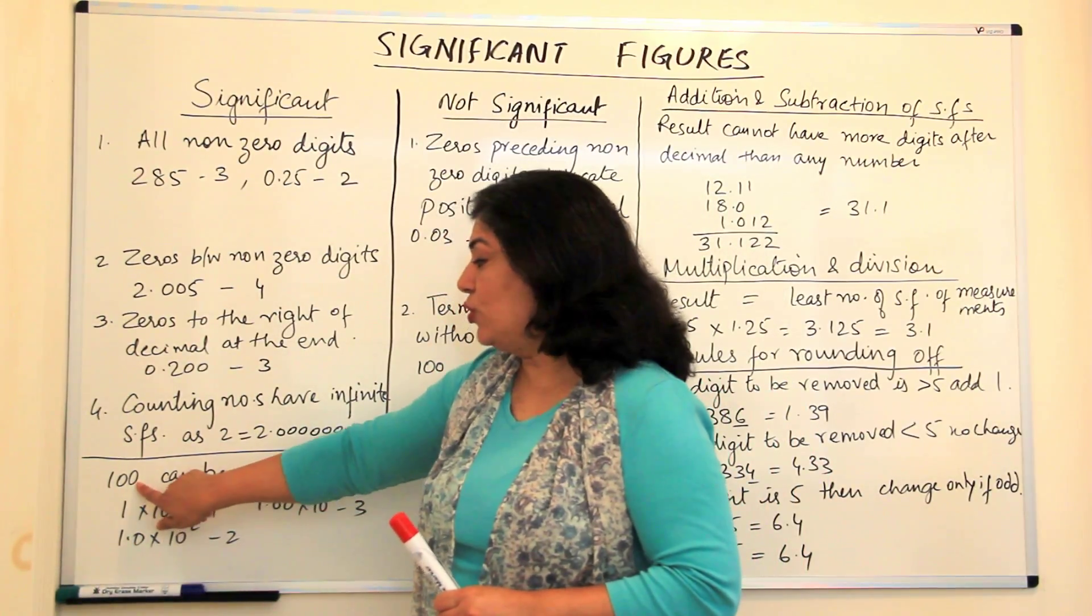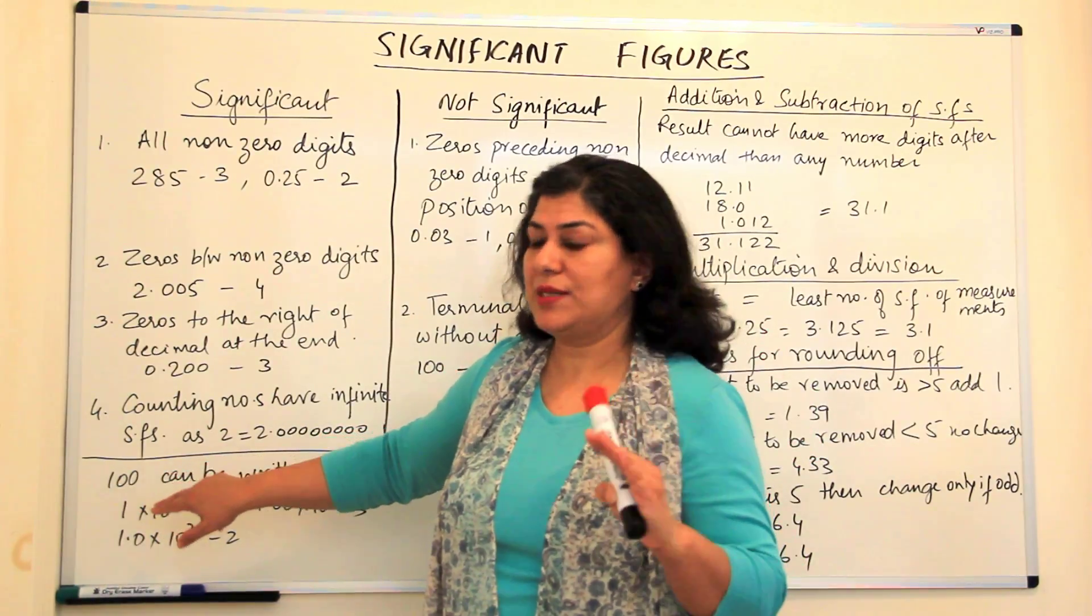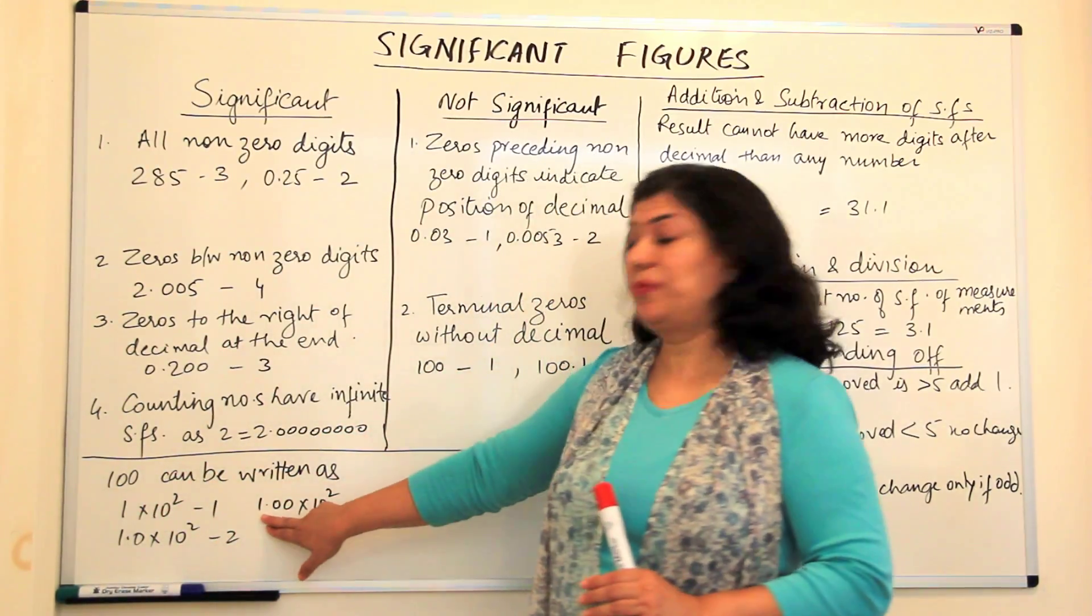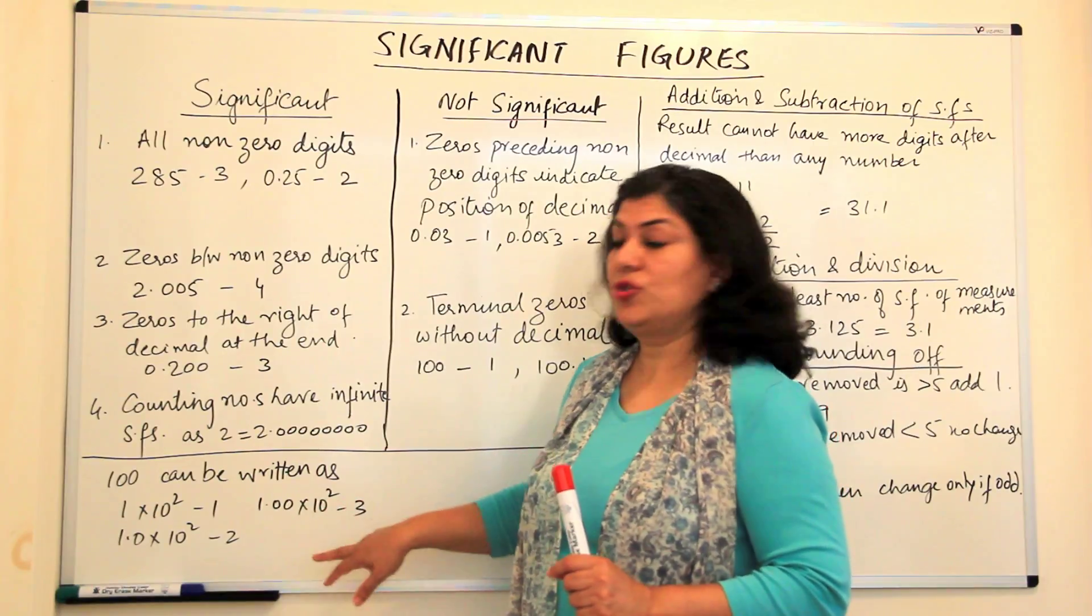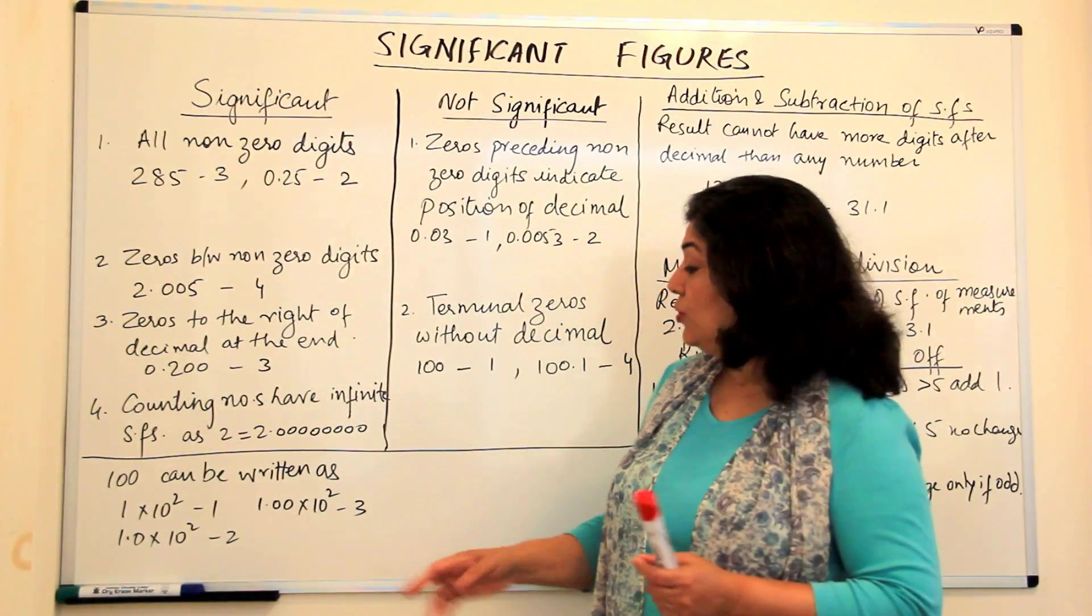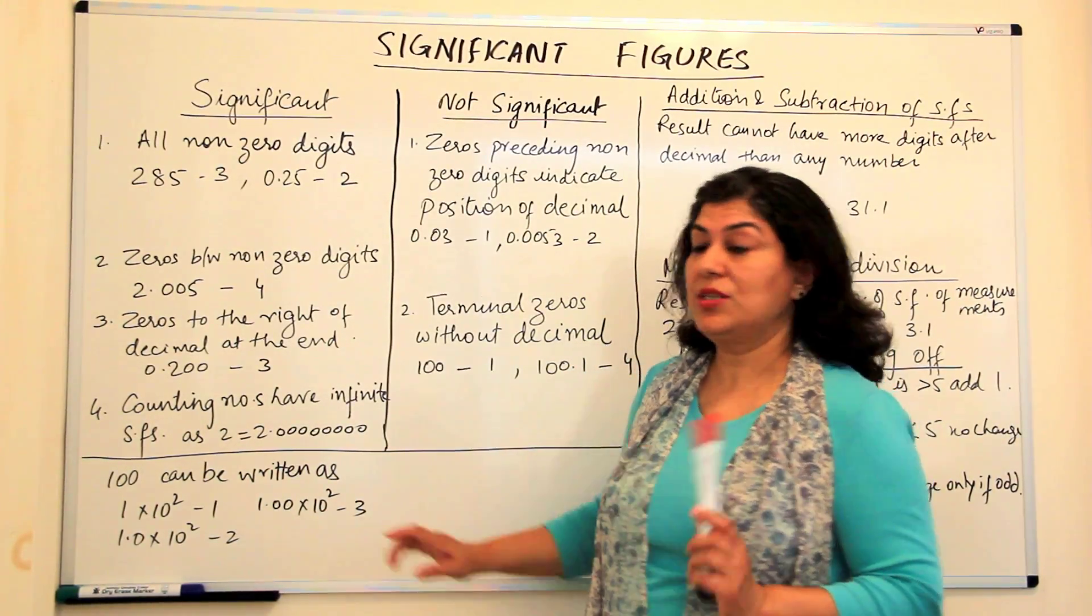So this would have two significant figures, but if I've counted something and I'm very sure that my third reading should also be 0, but it might have a margin of error of plus minus 1, then I would express it as 1.00 into 10 to the power 2, which would have three significant figures.